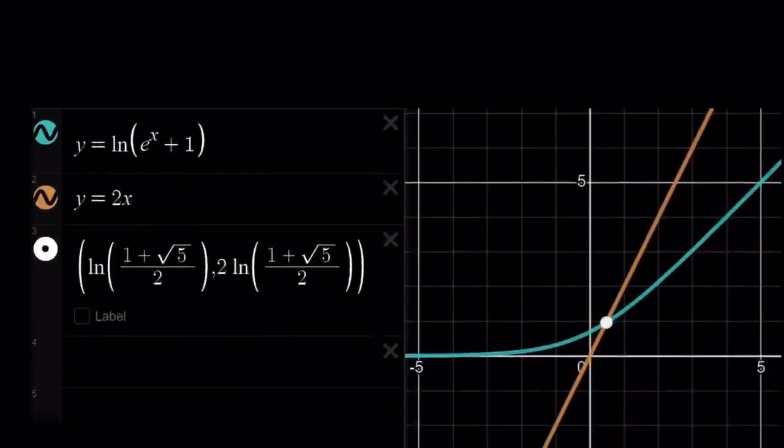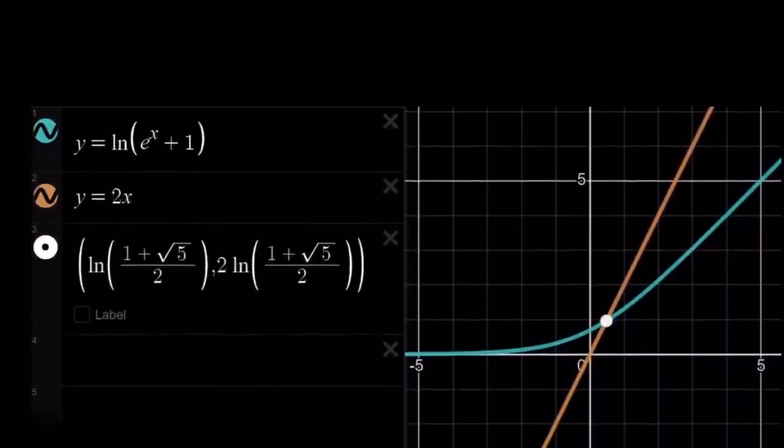I just wanted to show you what the graphical representation looks like. So, here I have y = ln(e^x + 1) along with y = 2x, which is a straight line that passes through the origin. And they intersect at the following point: ln((1 + √5)/2). So, this is the x value we have been looking for. And this brings us to the end of this video.